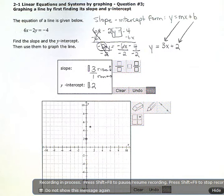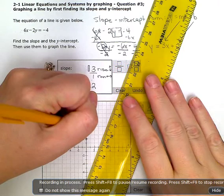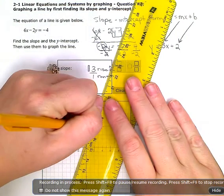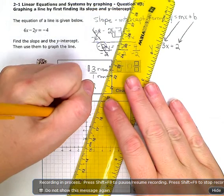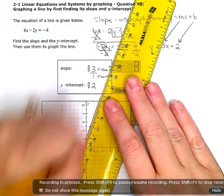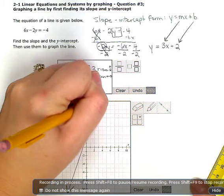Now I have 2 points on my grid. Once I have 2 points, I have enough to draw in my line. And I'm done.